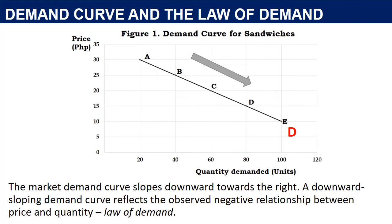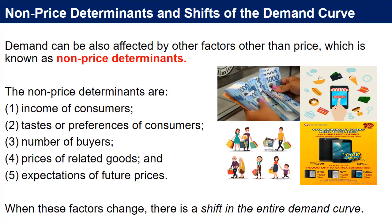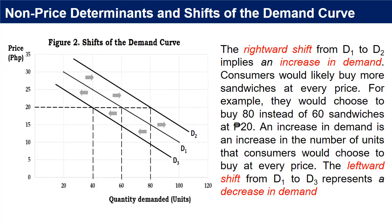We have discussed that price is the only factor that determines quantity demanded, but demand can also be affected by other factors known as non-price determinants. The non-price determinants are: income of consumers, tastes or preferences of consumers, number of buyers, prices of related goods, and expectations of future prices. When these factors change, there is a shift in the entire demand curve. Figure 2 shows the shifts in the market demand curve that result from a change in one of the non-price factors.